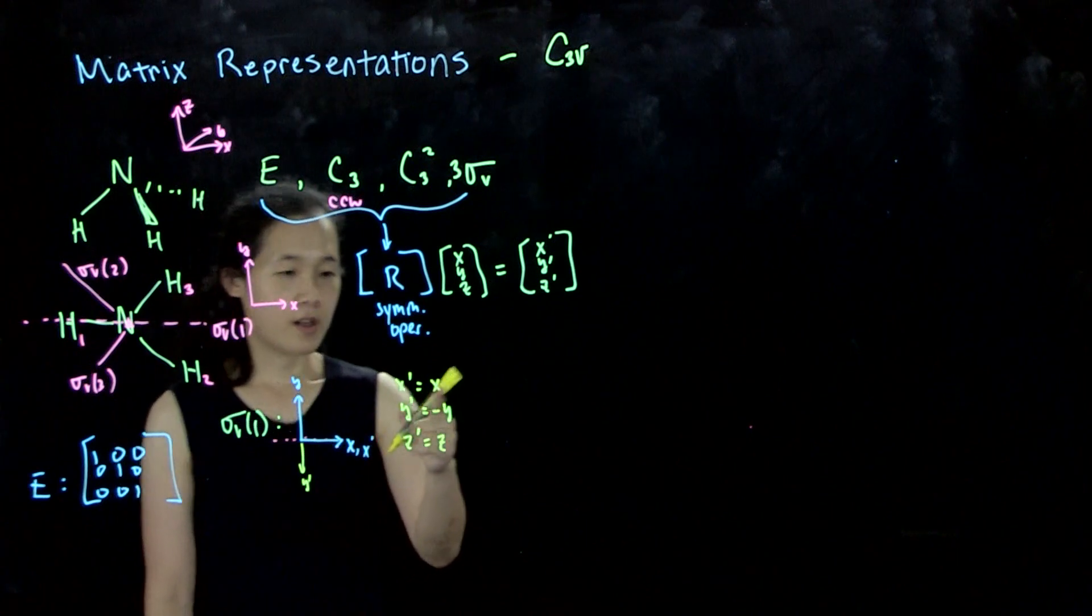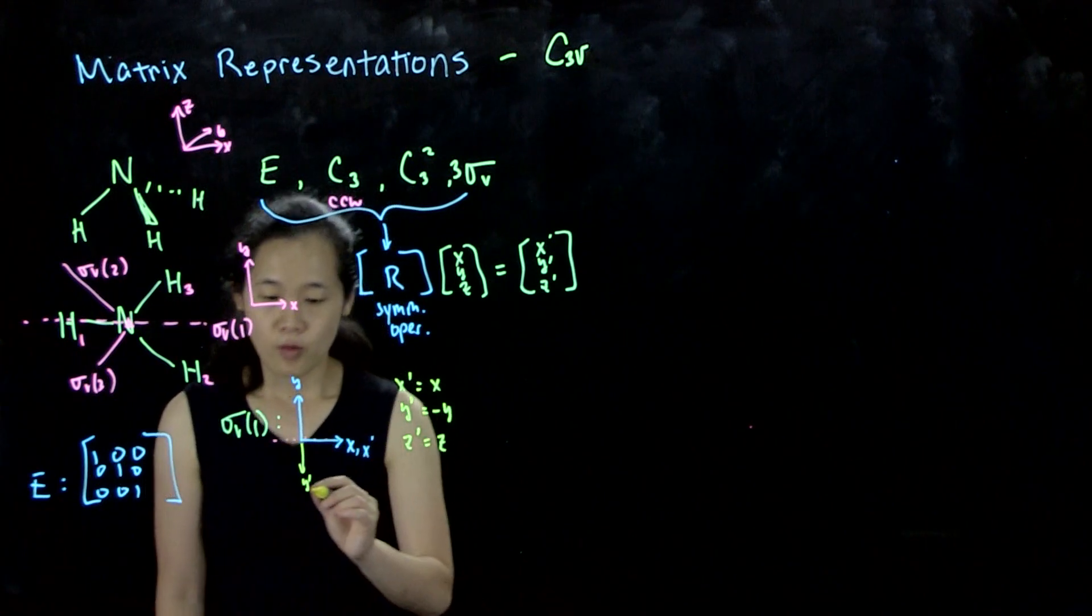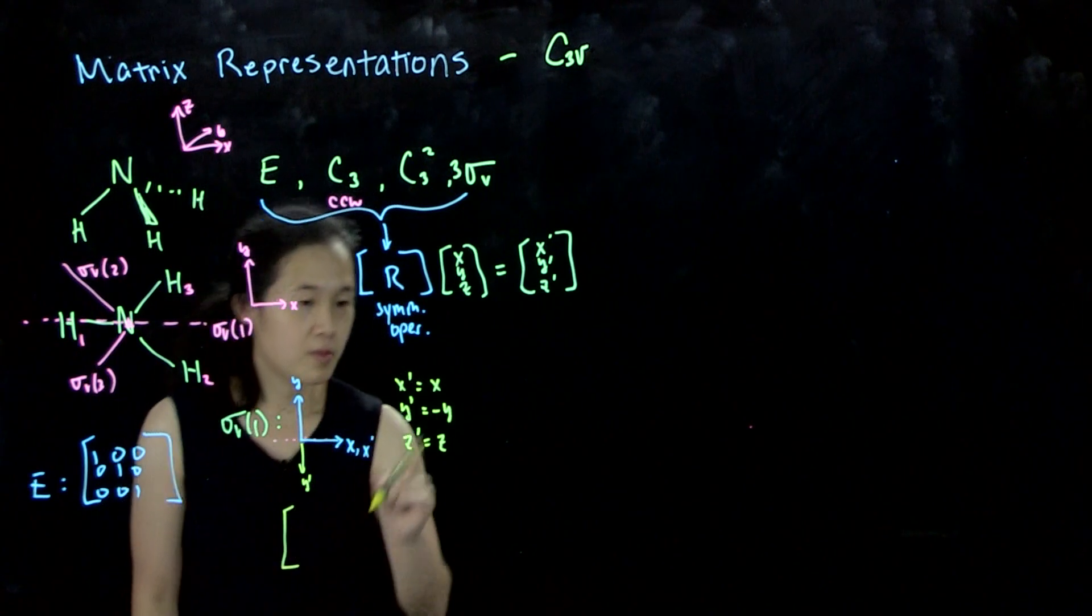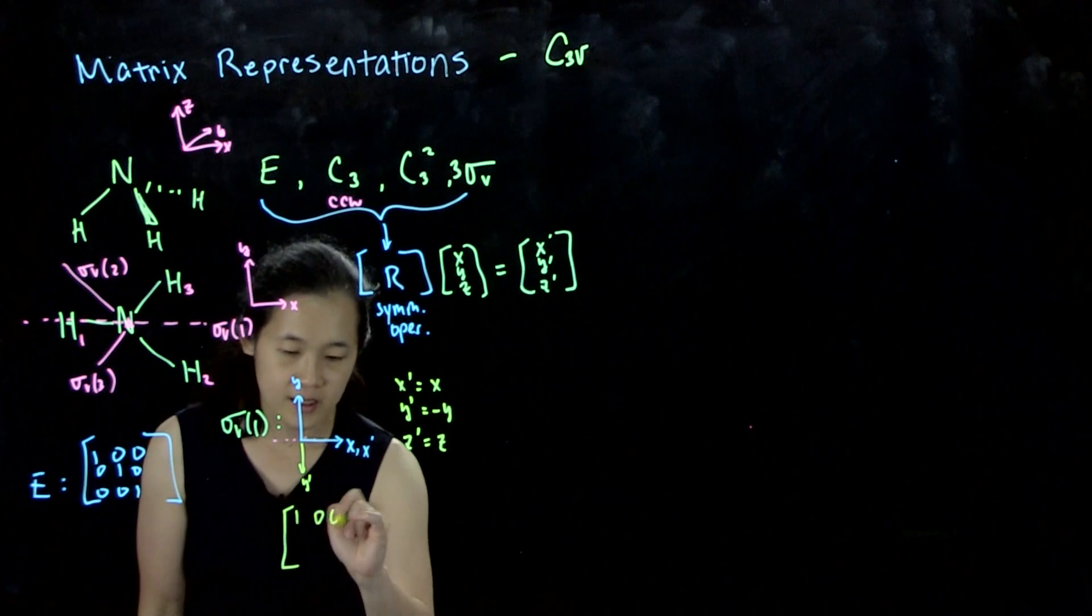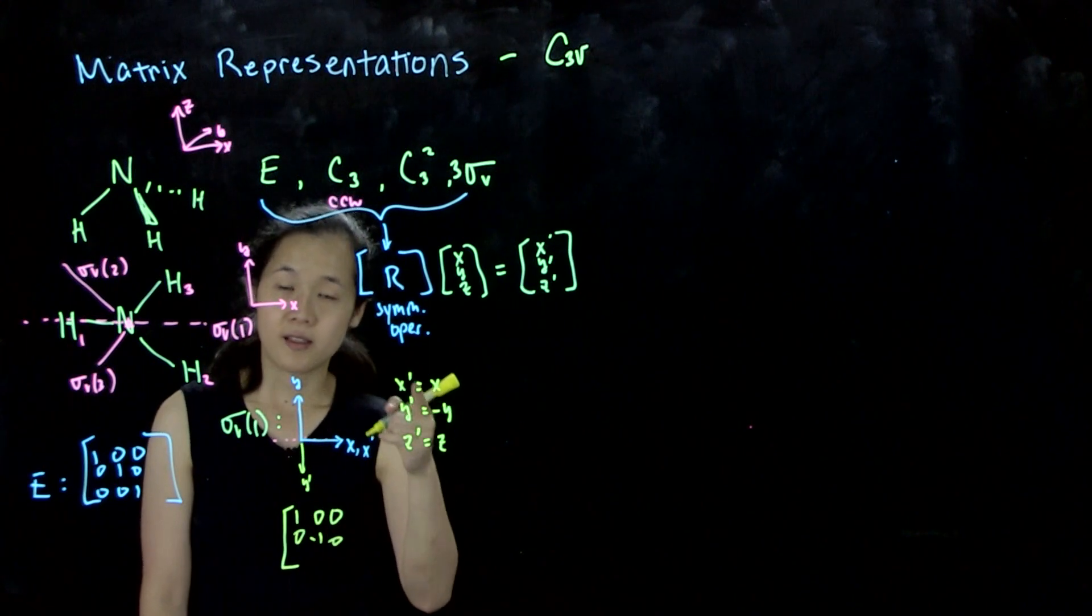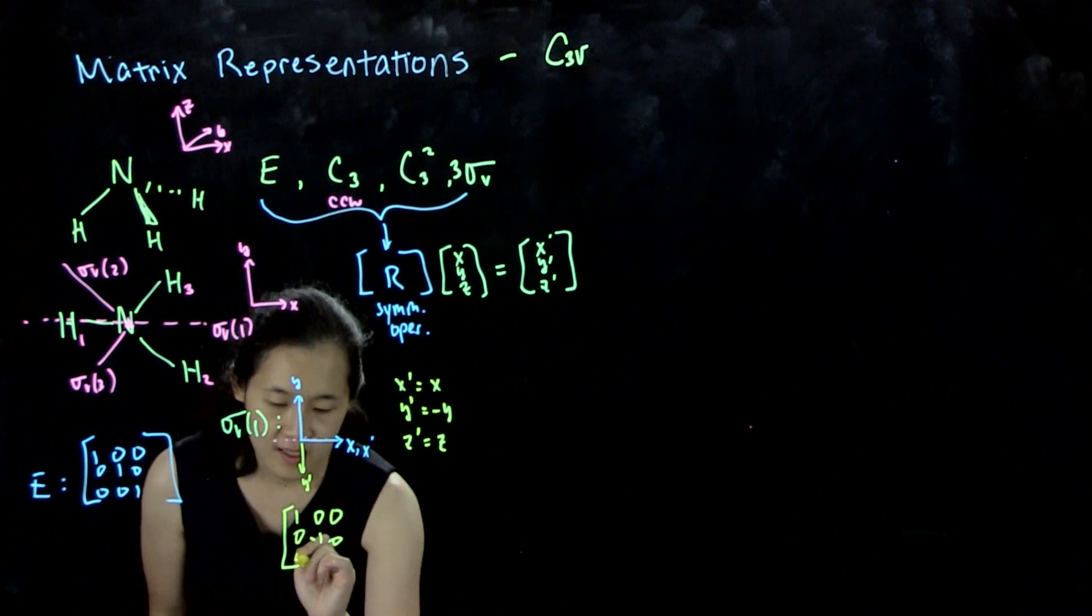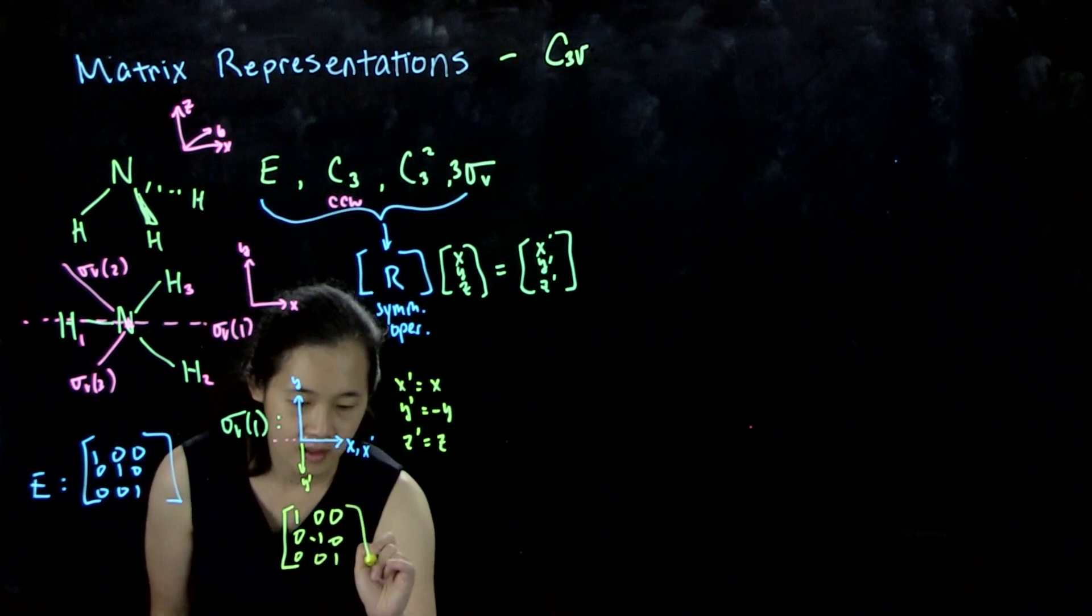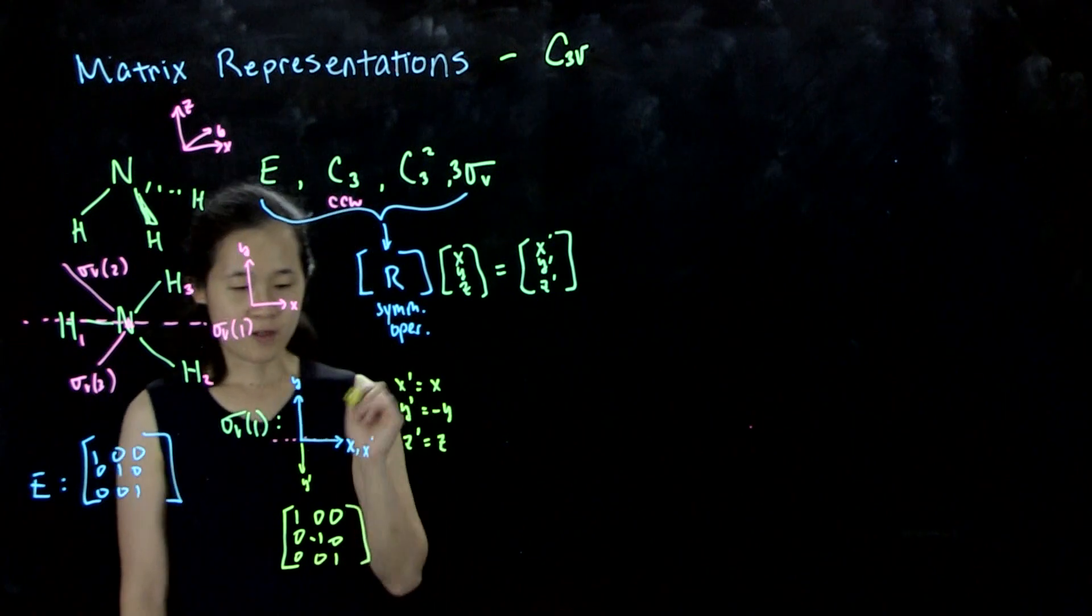Therefore for this matrix we must know that sigma v1 is going to be 1, 0, 0 because x is unchanged, 0 minus 1, 0 because y is negative of itself and then z is 0, 0, 1.